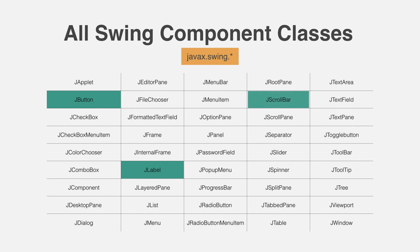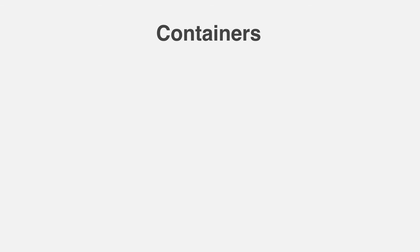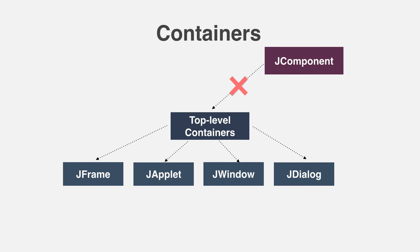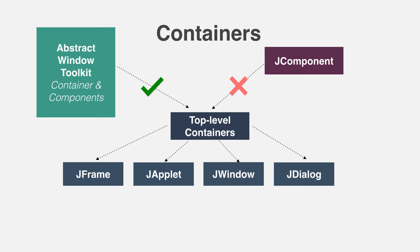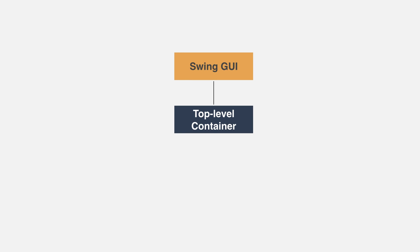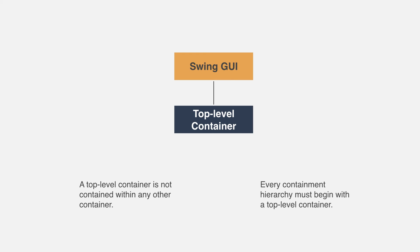The class for a scroll bar is JScrollBar. Swing defines two types of containers. The first are top-level containers, which include JFrame, JApplet, JWindow, and JDialog. These containers do not inherit JComponent; they do however inherit the AWT classes Component and Container. Unlike Swing's other components which are lightweight, the top-level containers are heavyweight. A top-level container must be at the top of a containment hierarchy and is not contained within any other container. Every containment hierarchy must begin with a top-level container, and the one most commonly used for applications is JFrame.